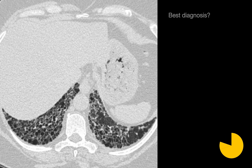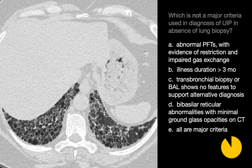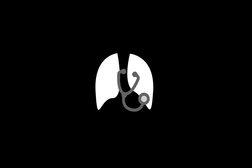What's your best diagnosis? In this case, we see a peripheral reticular interstitial pattern, a little worse in the lower lungs than the upper lungs, with associated honeycombing. With these combination of features, we would favor UIP, usual interstitial pneumonia, IPF. Which is not a major criteria used in the diagnosis of UIP in the absence of lung biopsy? The answer here is illness duration over three months.